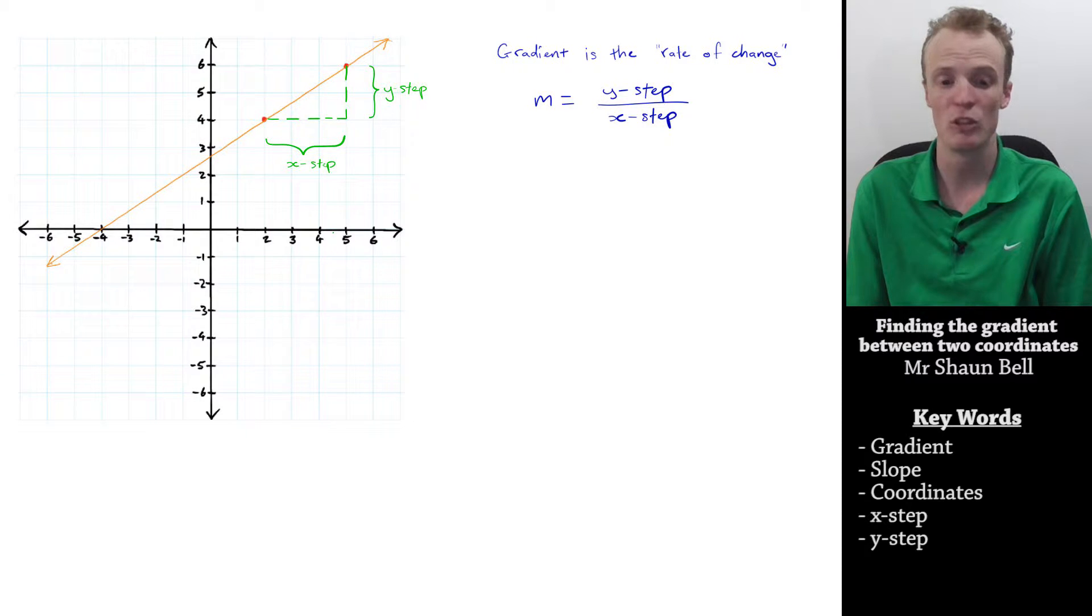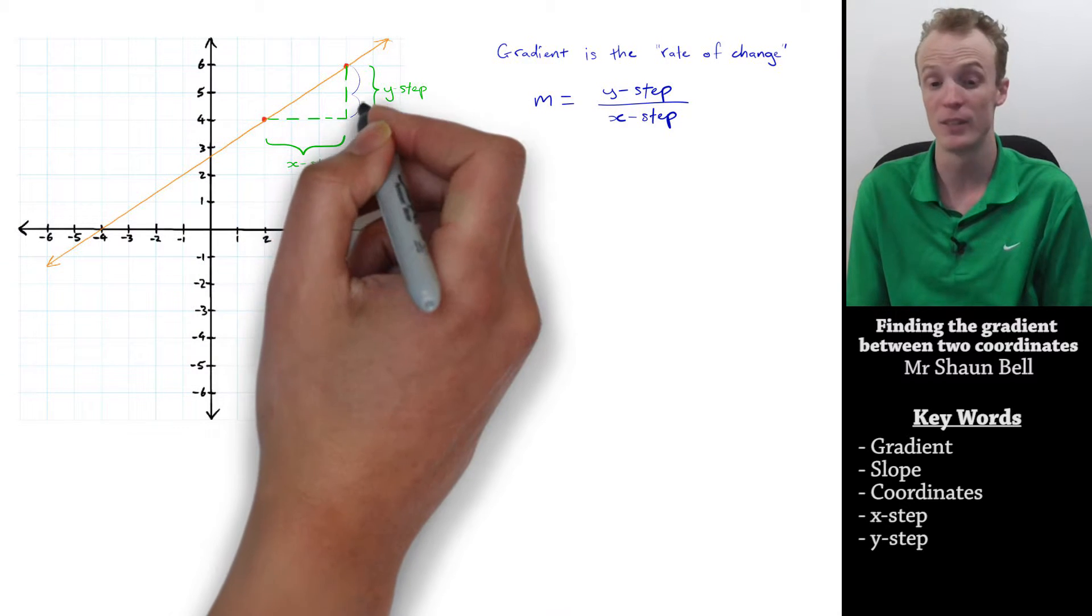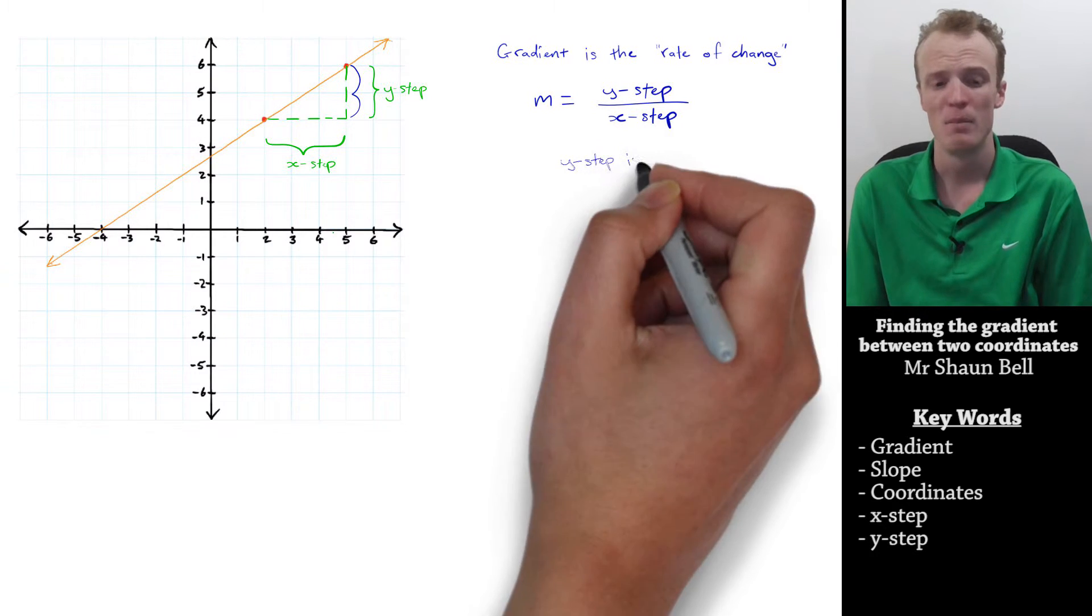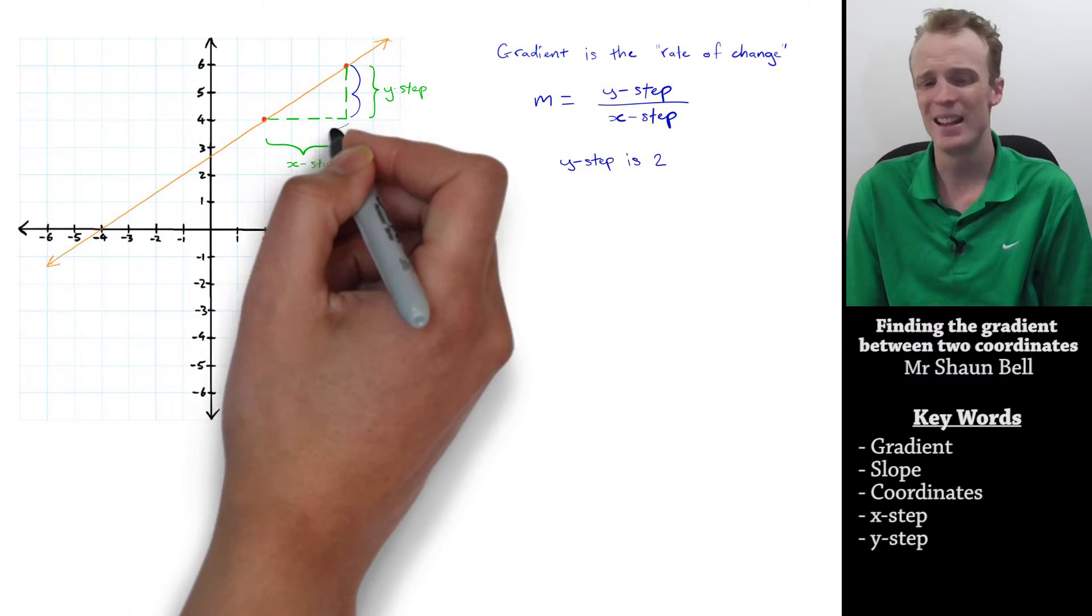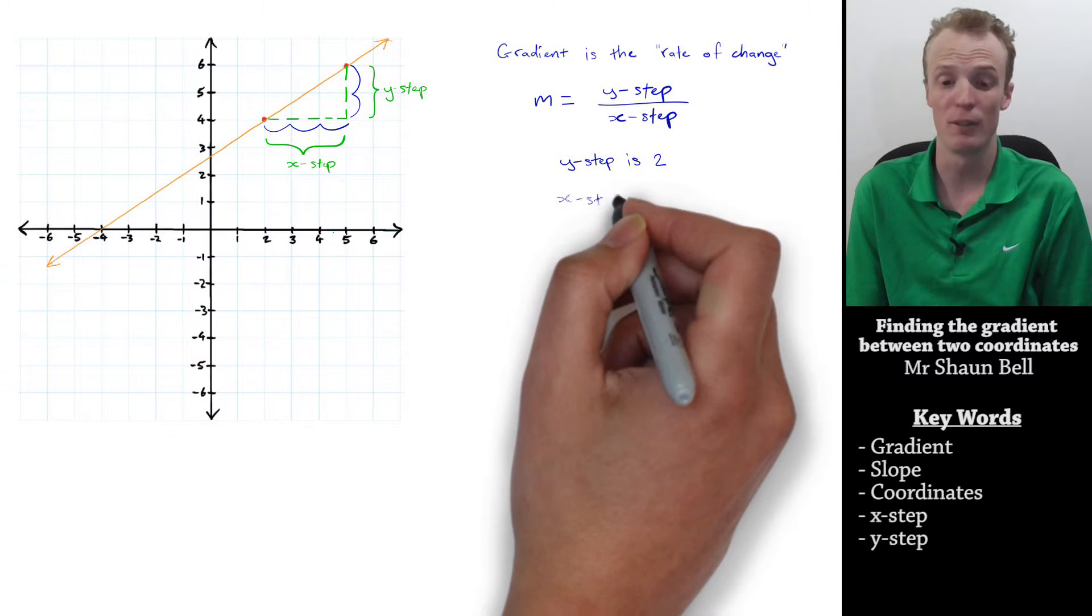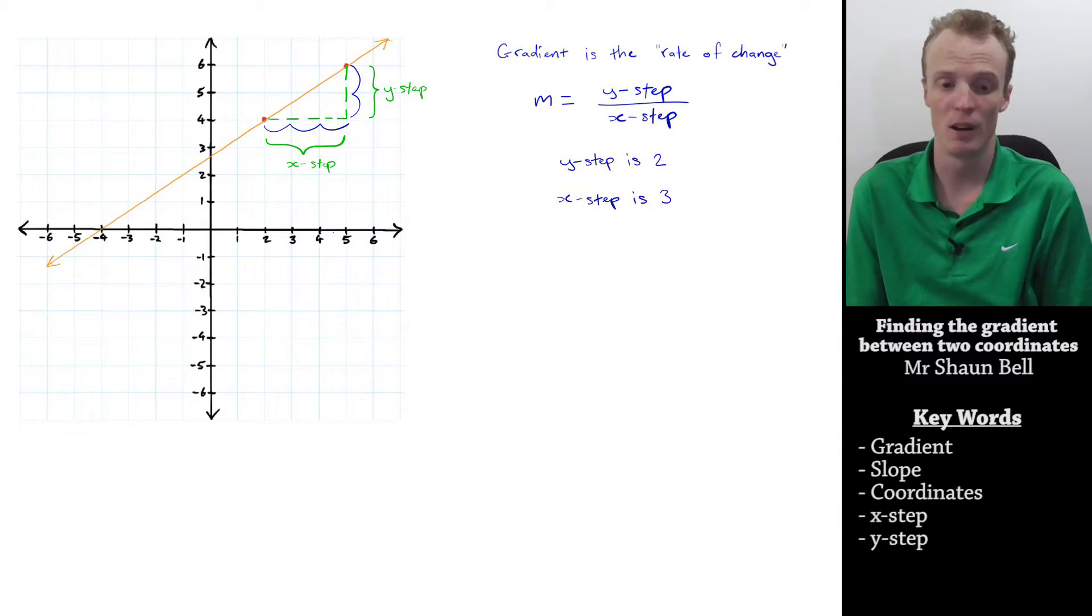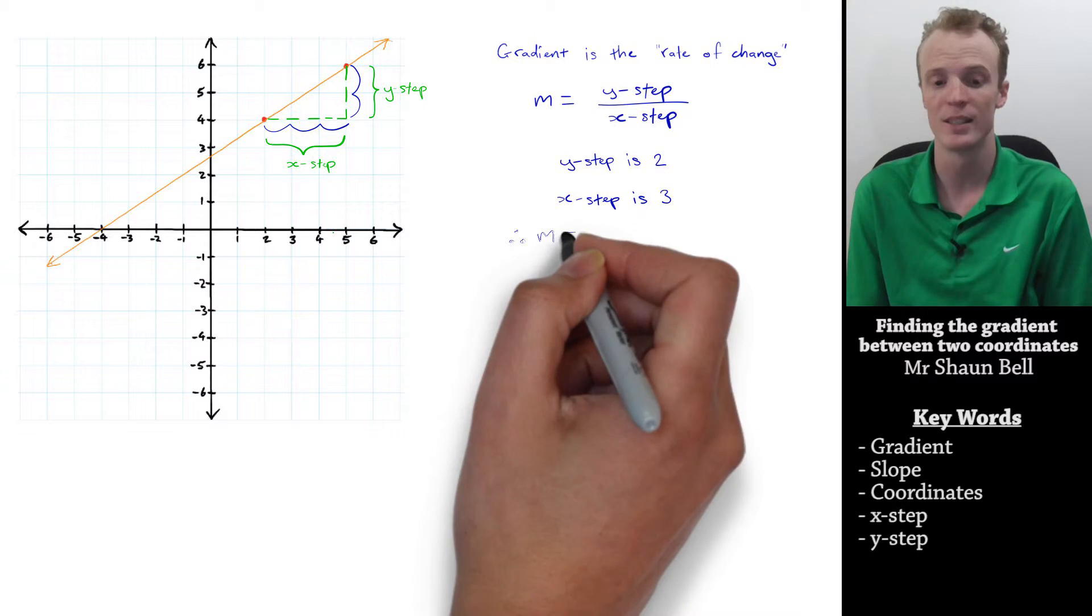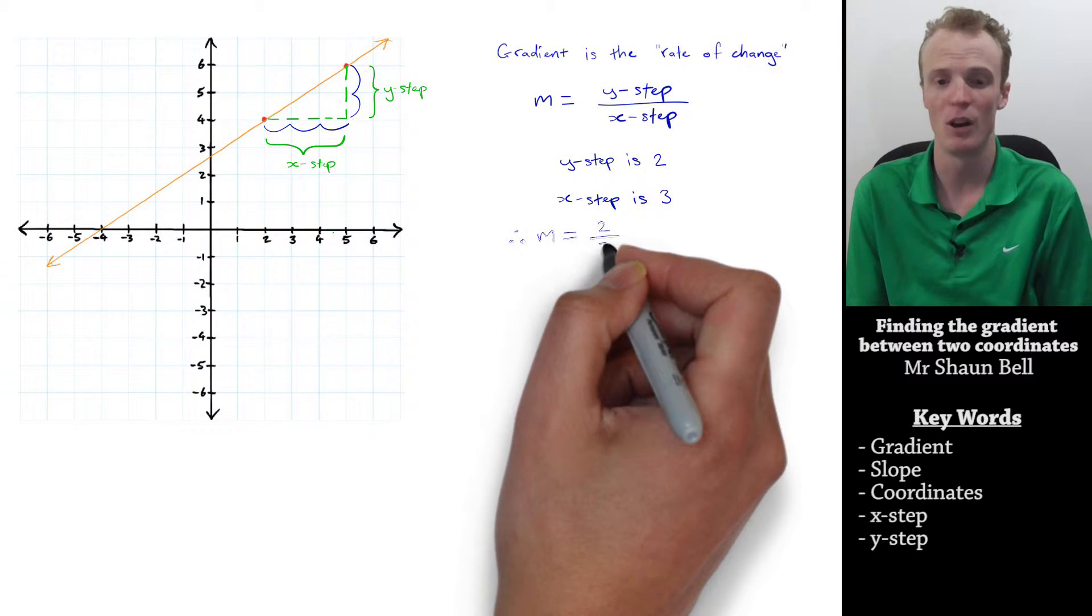To find this we could use the graph and count the number of steps in the y direction, which is positive 2, because it's going up. Then we could count the number of steps along the x, which is positive 3, because it's going to the right. That means we can describe the gradient of this line, or between these two coordinates, as a fraction 2 over 3.